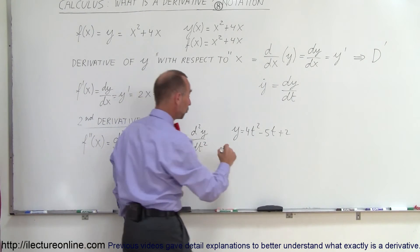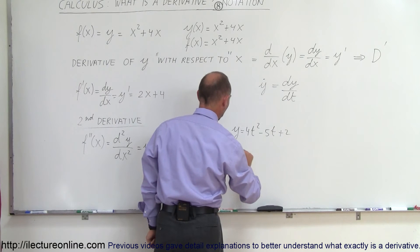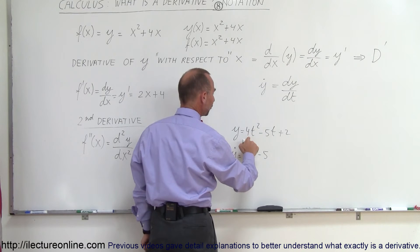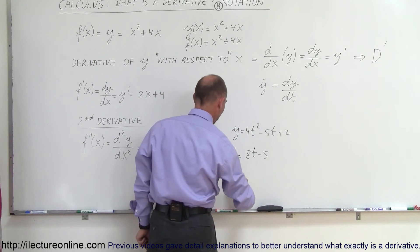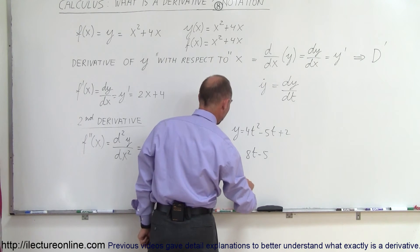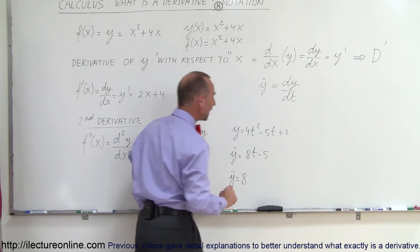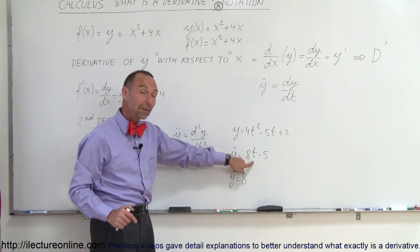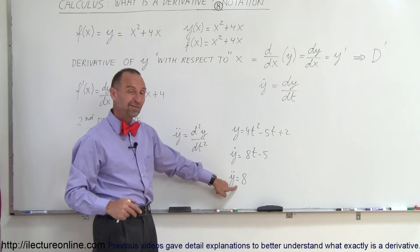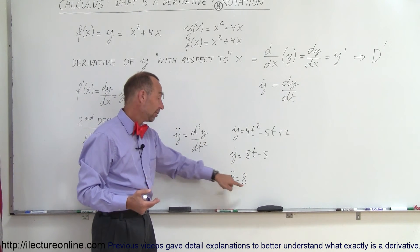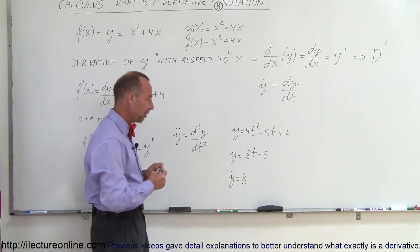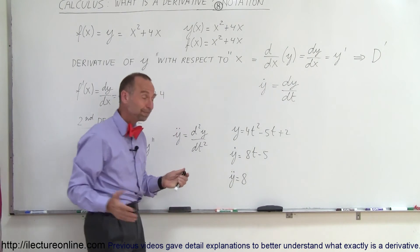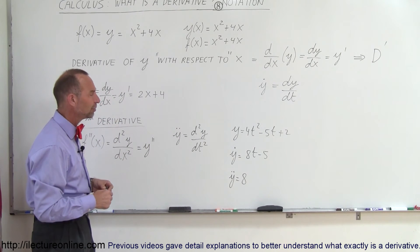Taking the first derivative: y dot equals 8t minus 5, since we multiply 2 times 4 and the constant drops out. Then y double dot equals simply 8. This tells us how fast y changes when time changes — the second derivative is just the constant 8, meaning the first derivative is changing at a constant rate of 8.